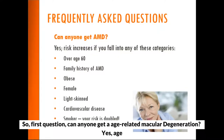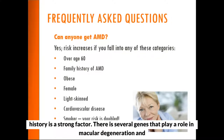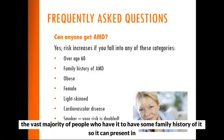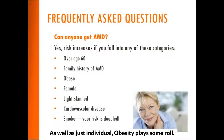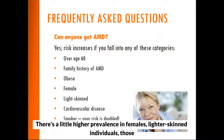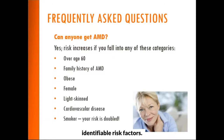Can anyone get age-related macular degeneration? Yes. Age increases your risk — it's commonly seen in patients over 65. Family history is a strong factor; there are several genes that play a role, and the vast majority of people who have it have some family history. Obesity plays some role. There's a slightly higher prevalence in females, in lighter-skinned individuals, those with cardiovascular disease — particularly cholesterol disease — and smoking are identifiable risk factors.